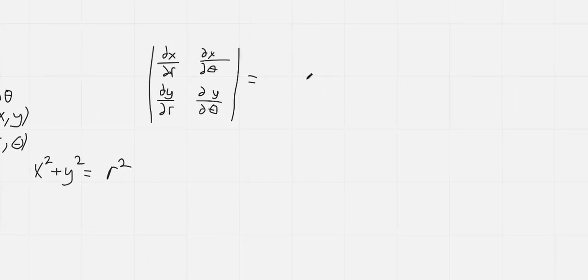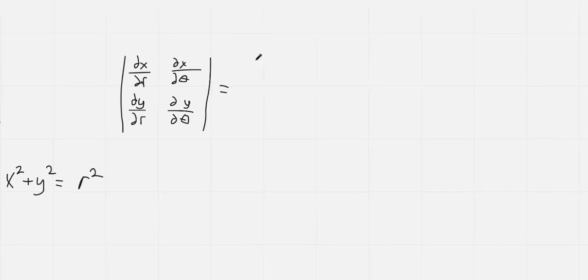Therefore, this matrix will become the partial of r cosine theta with respect to r is just cosine theta. And similarly, for y we will get sine theta.